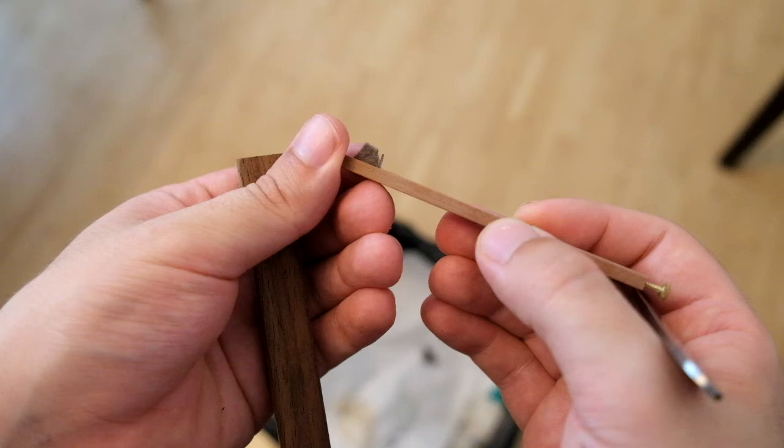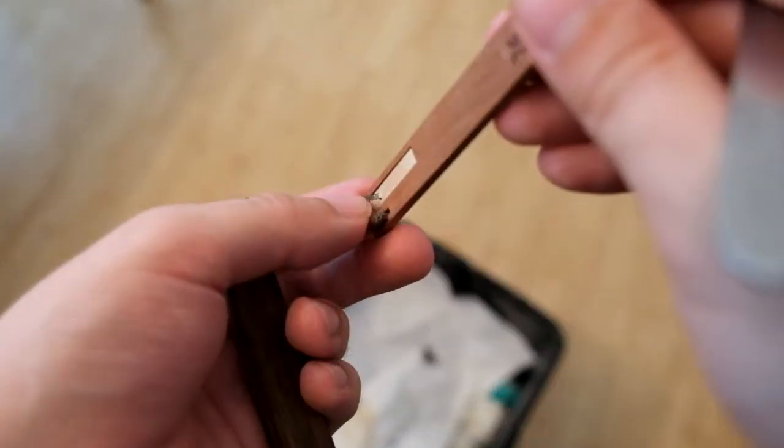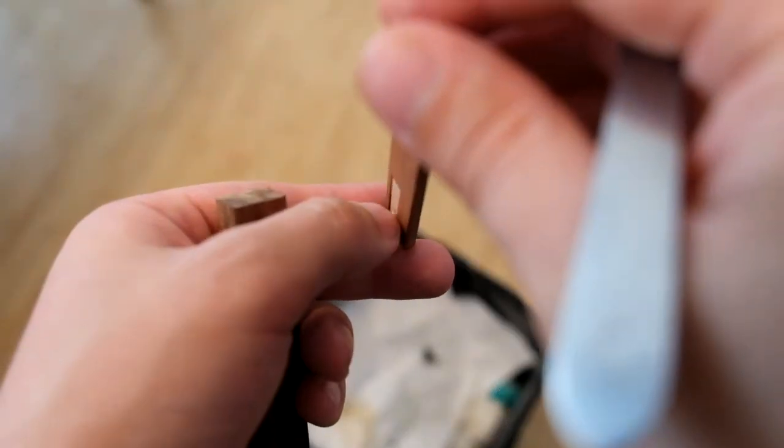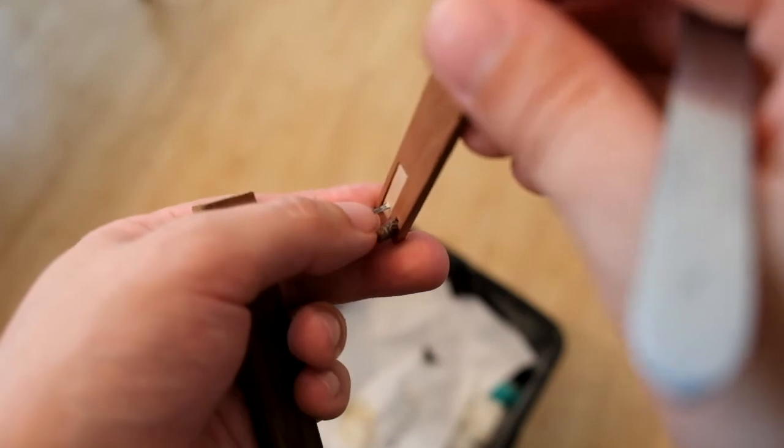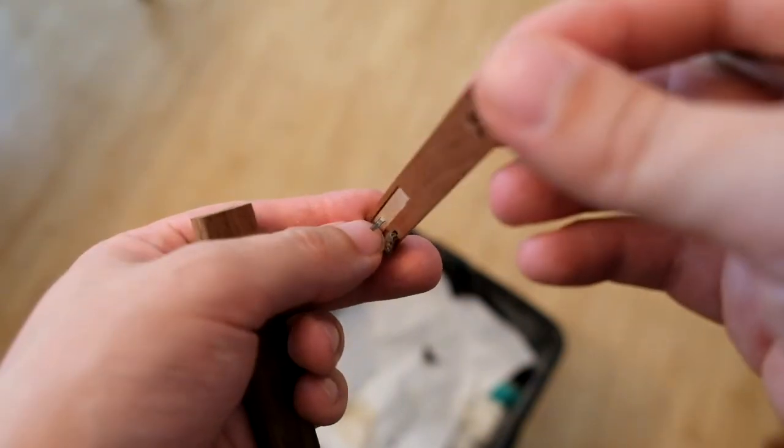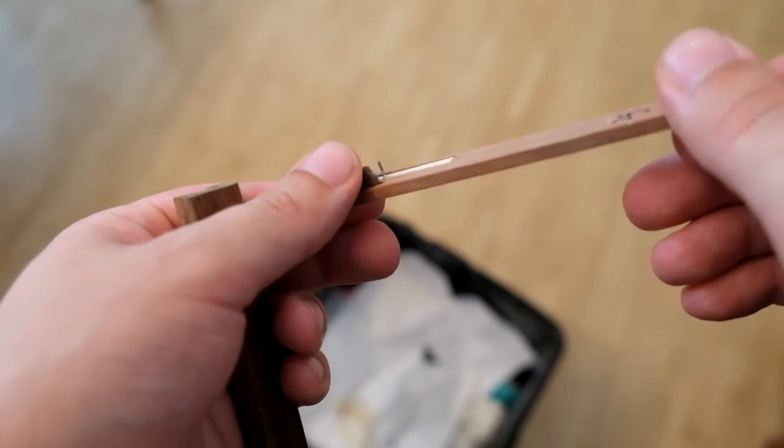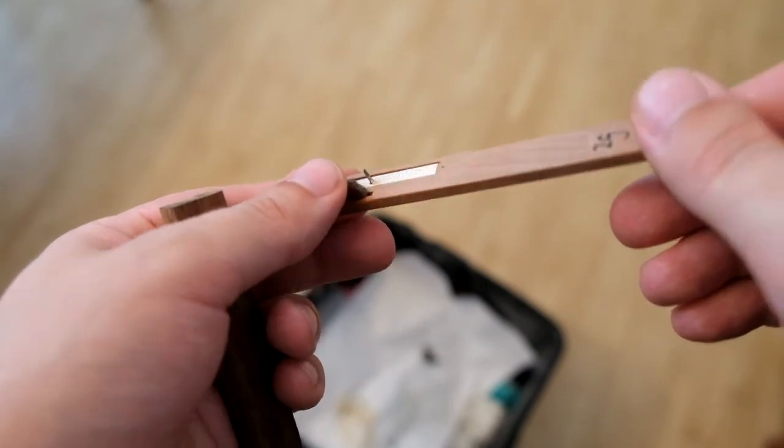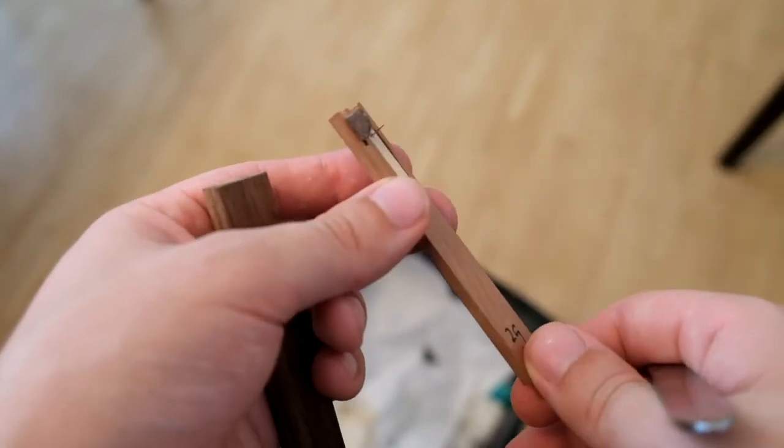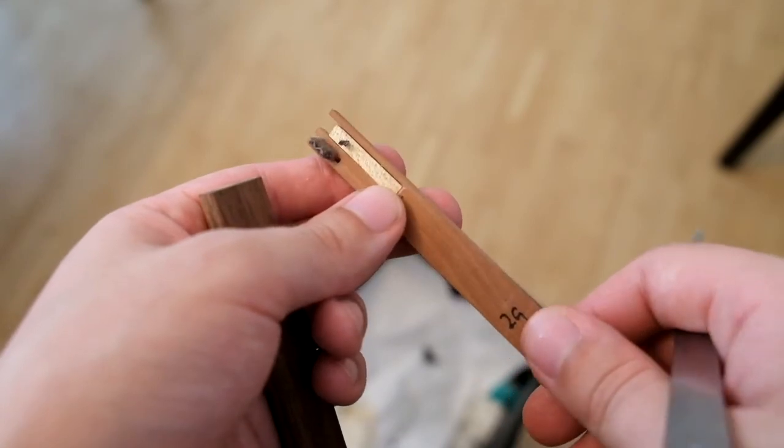If your plectrum keeps hanging onto the string instead of properly returning, there are a few things you can do. First, make sure the bottom of the plectrum is smooth and that you haven't cut any edges in there. Next, ensure the length is correct. You might also want to take a look at the string. If it is dirty in the place where the plectrum strikes, that might be the cause of your issue.